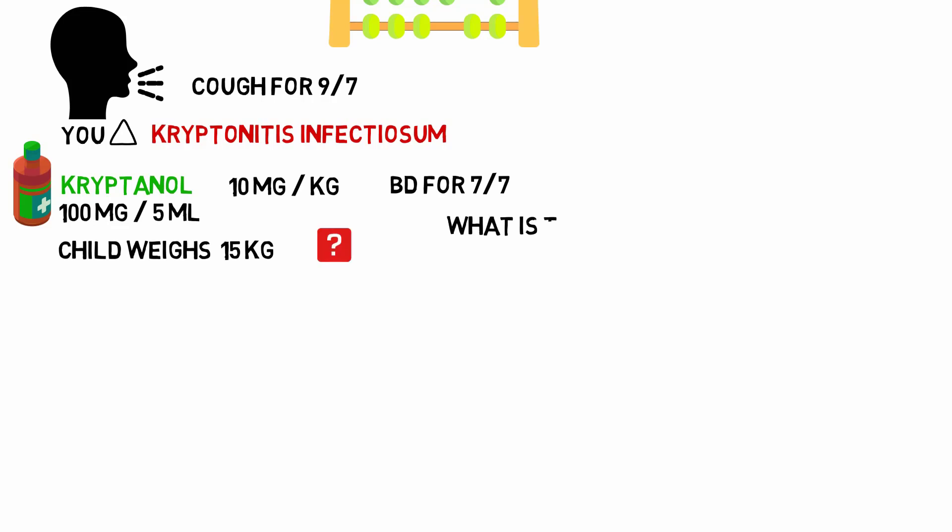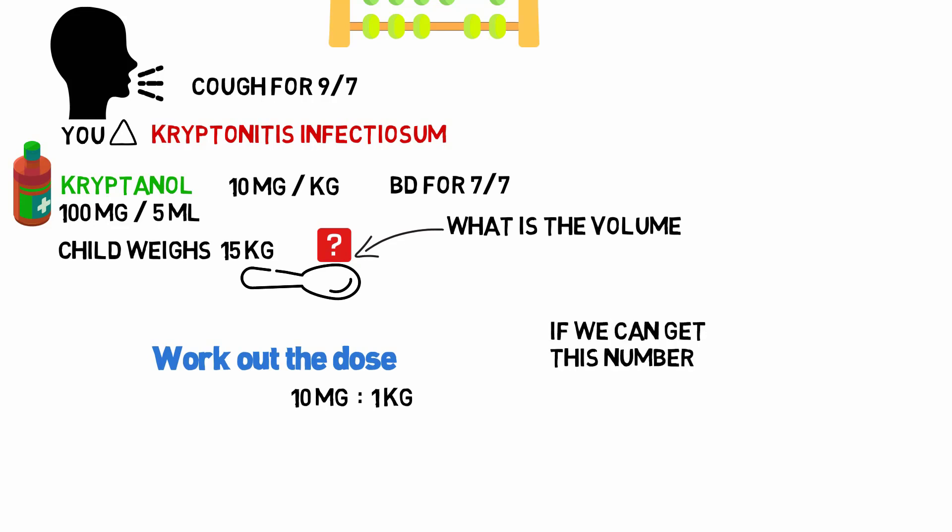So the question is, what is the actual volume of cryptonol that you need to pour out onto the spoon to give the correct dose? So first of all, work out the dose. So we want to give 10 milligrams per kilogram. If we can get this number to 15 kilograms,